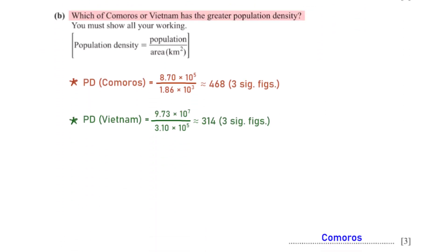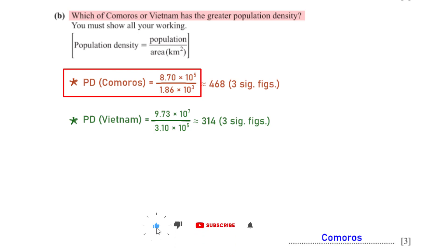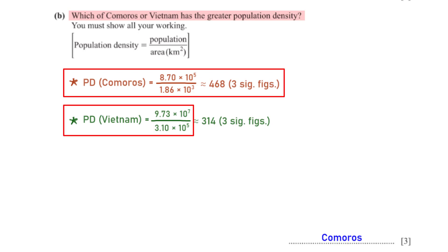Which of Comoros or Vietnam has the greater population density? The population density of Comoros is 8.7 × 10⁵ divided by 1.86 × 10³, which gives 468 (rounded to 3 significant figures). The population density of Vietnam is 9.73 × 10⁷ divided by 3.1 × 10⁵, which gives 314 (rounded to 3 significant figures). Therefore, Comoros has a higher population density.